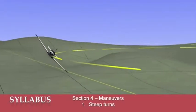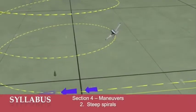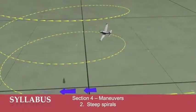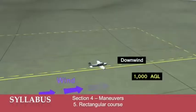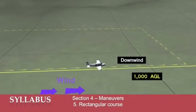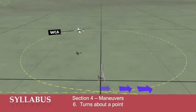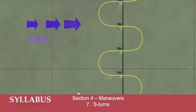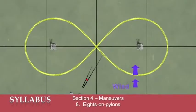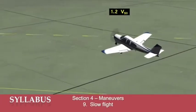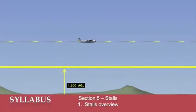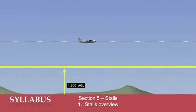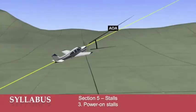In Section 4, the maneuvers, we'll examine steep turns, steep spirals, chandels, lazy eights, the rectangular course, turns about a point, S-turns, eights on pylons, and slow flights. In Section 5, we'll study stalls, beginning with the stalls overview, power-off stalls, and power-on stalls.